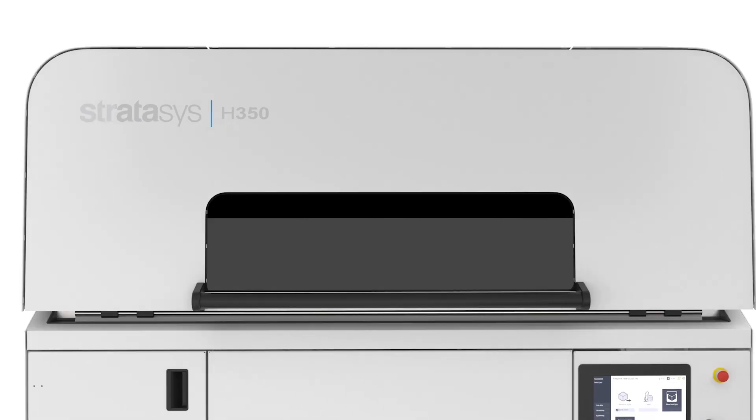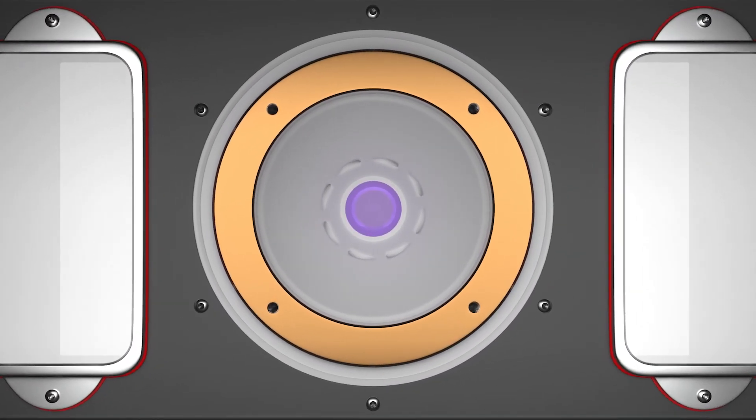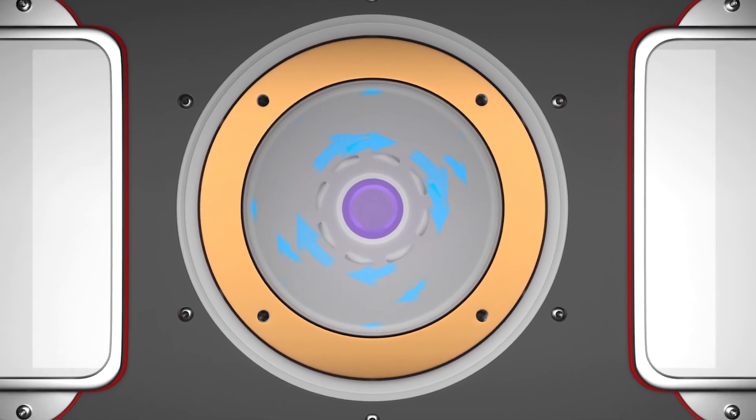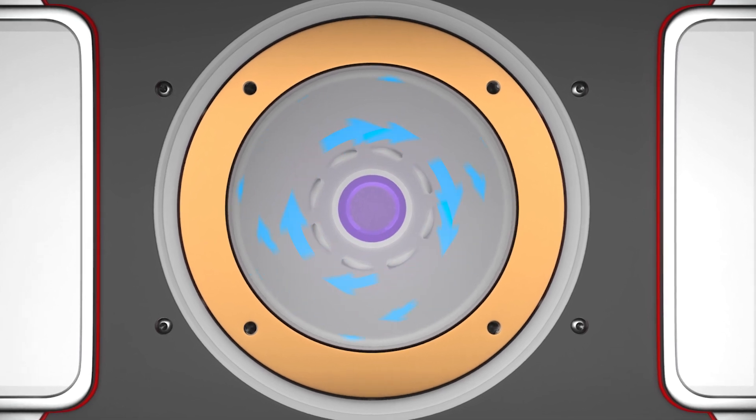To ensure that the thermal camera's lens is clean, the H350 features the innovative Vortex Bell. This complex SAF printed part shields the camera, preventing any smoke and particles from interfering with lens quality.